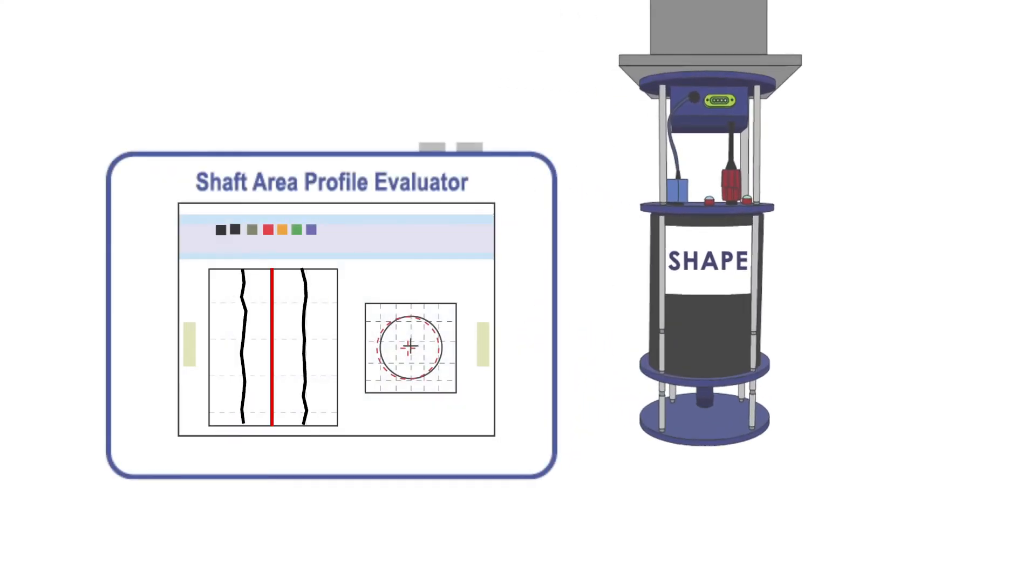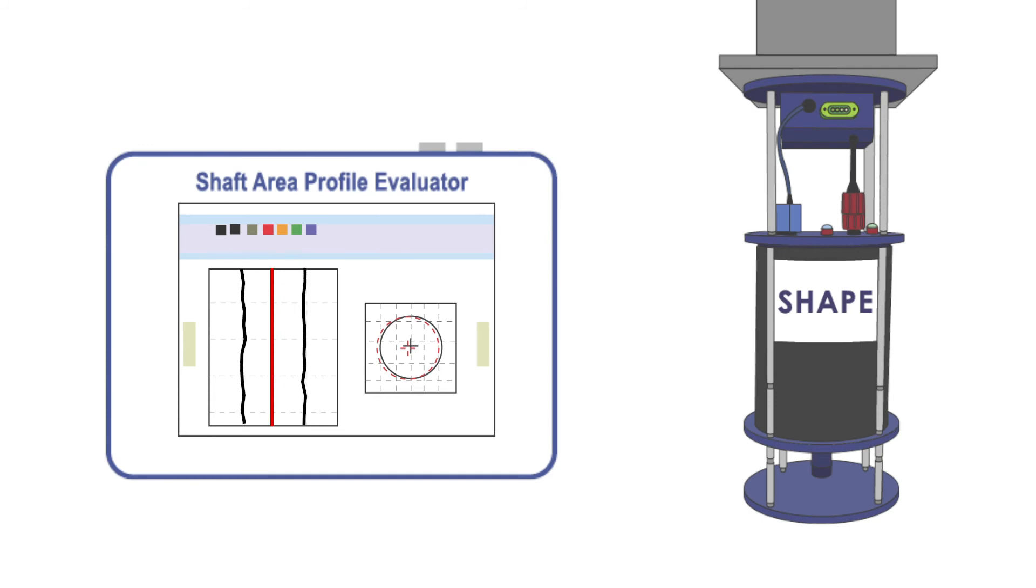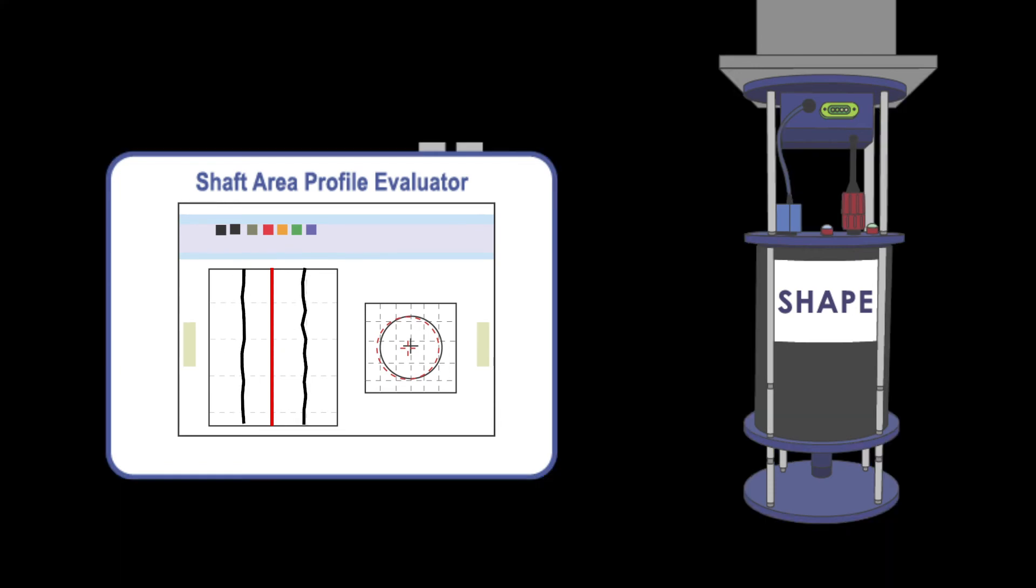Once the SHAPE has been retrieved from the shaft excavation, the data is downloaded and analyzed on-site providing a fast, economical, visual representation of the shaft verticality and excavation profile.